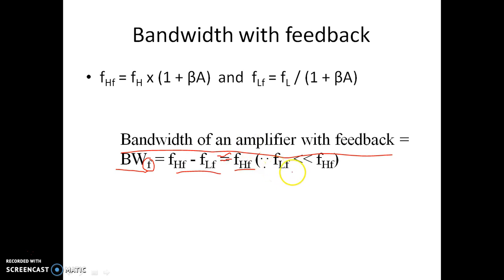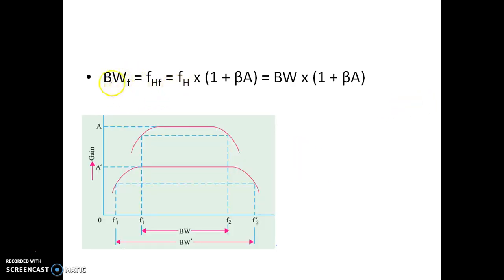FLF is much lesser than FHF, so bandwidth with feedback equals the higher cut-off frequency with feedback. That is equal to FH × (1 + βA). Because of the application of negative feedback, the higher cut-off frequency increases by this factor.